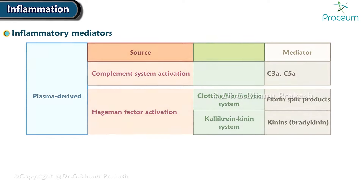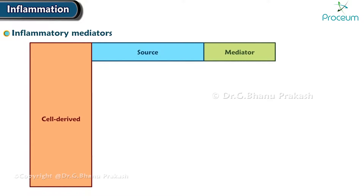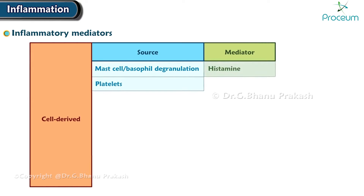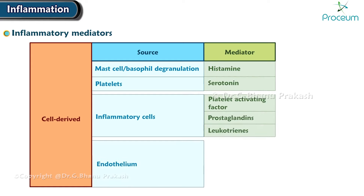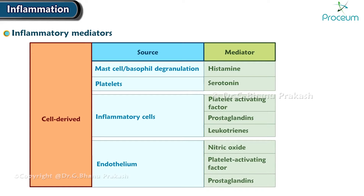There are also cell-derived inflammatory mediator sources, such as mast cell or basophil degranulation giving rise to histamine, platelets producing serotonin, inflammatory cells producing platelet-activating factor, prostaglandins, and leukotrienes, and endothelium producing nitric oxide, platelet-activating factor, and prostaglandins.